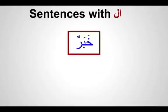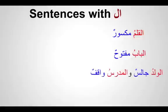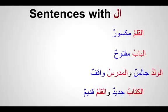Now let's go to khabar. Khabar gives some news about the muptada. In all these sentences: al-qalamu maksoorun — maksoorun is the khabar; al-baabu maftoohun; al-waladu jaalisun; wal-mudarrisu waaqifun; al-kitaabu jadeedun; wal-qalamu qadeemun. There are five types of khabar. We are learning the first type — khabar as a single word. When the khabar is one word, we see that it is always ending with...